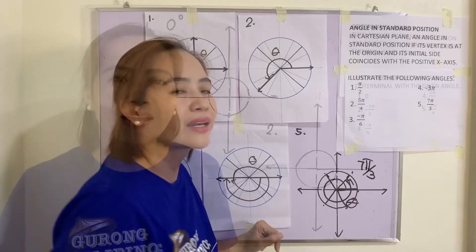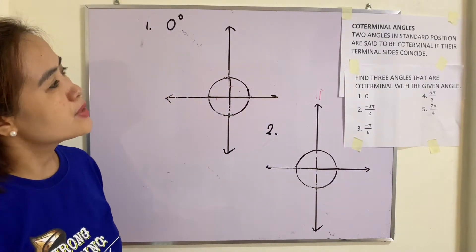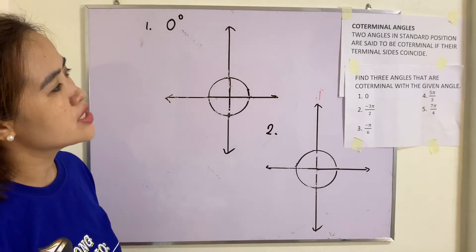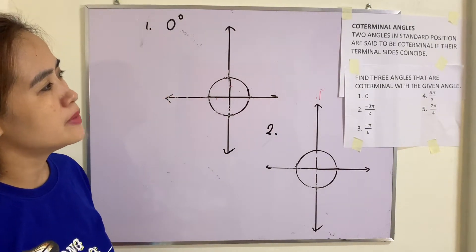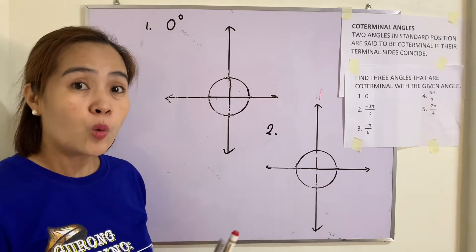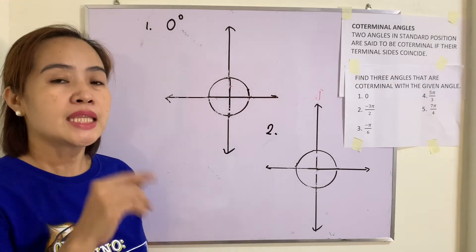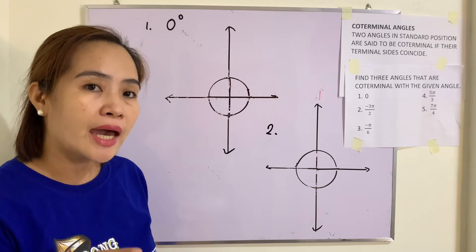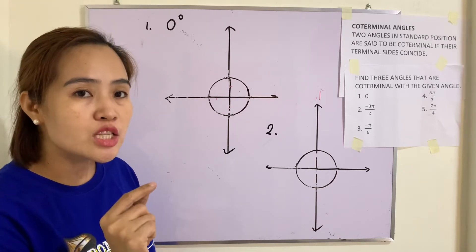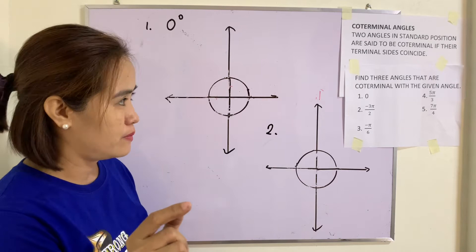Now let us go to coterminal angles. Two angles in standard position are said to be coterminal if their terminal sides coincide — meaning the terminal sides of both angles land in the same position.